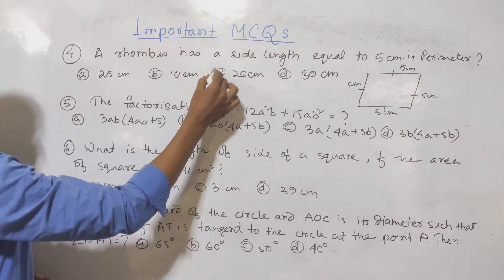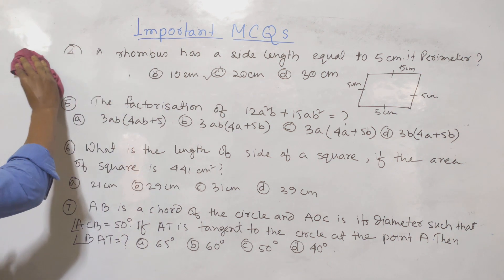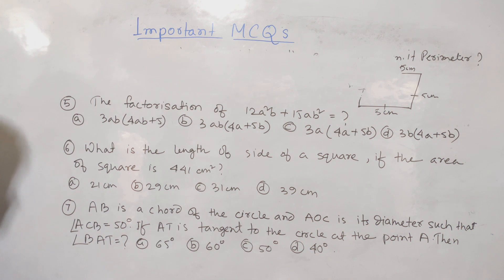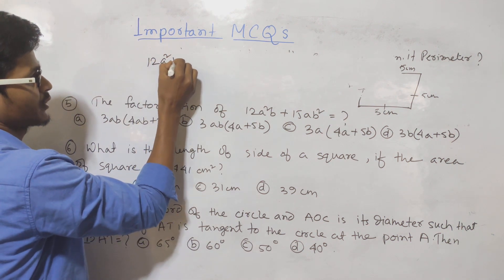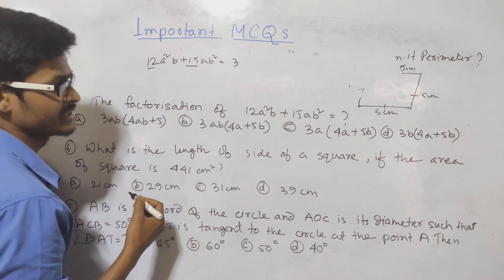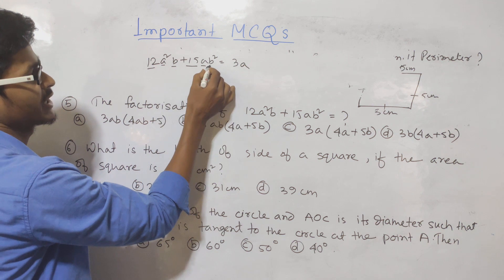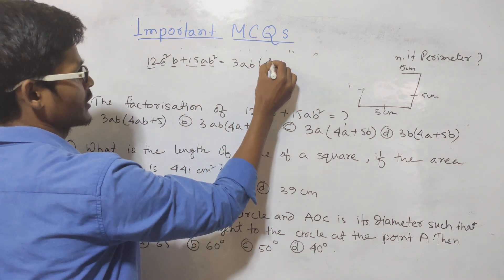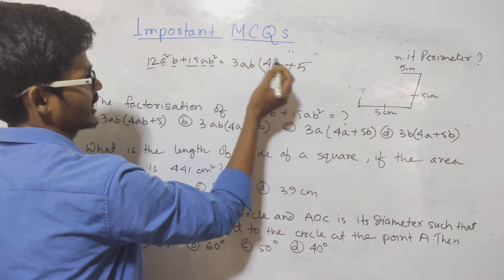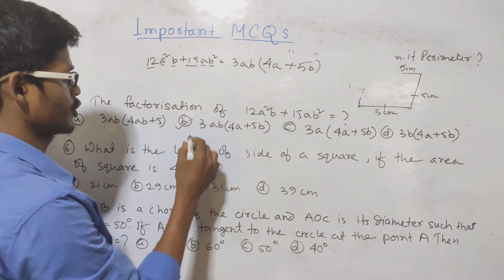The next question is the factorization of 12a squared b plus 15ab squared. The common factor of 12 and 15 is 3. We can also take out a and b as common. So the factorization is 3ab into 4a plus 5b. The answer is option B.